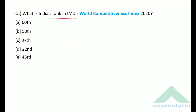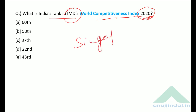What is India's rank in IMD's World Competitiveness Index 2020? According to this index, number one is Singapore and India's rank is 43rd — option E is the correct answer.